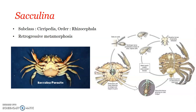Once Sacculina interna is established and root-like structures extend throughout the body of the host, it slowly projects out as a tumor-like mass. Once this structure is formed, it is known as Sacculina externa, and this is the final state of the Sacculina parasite.